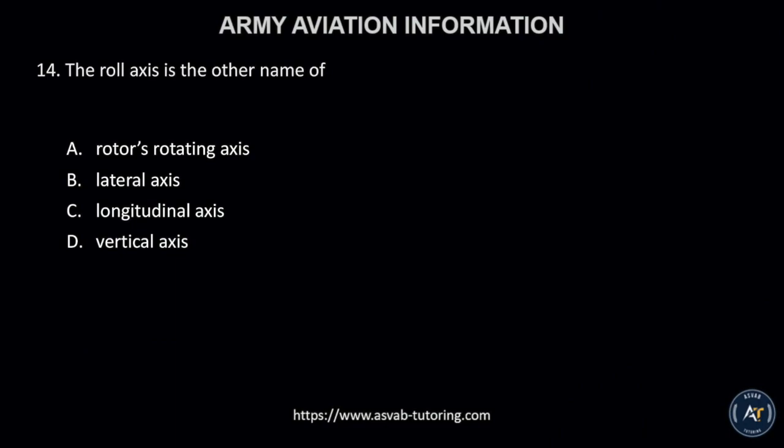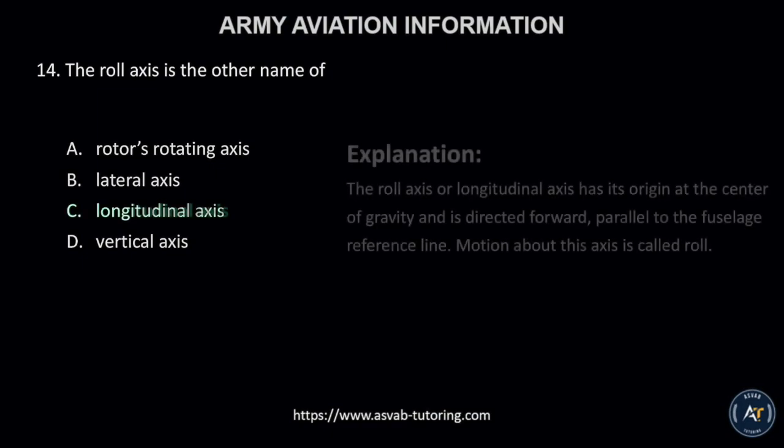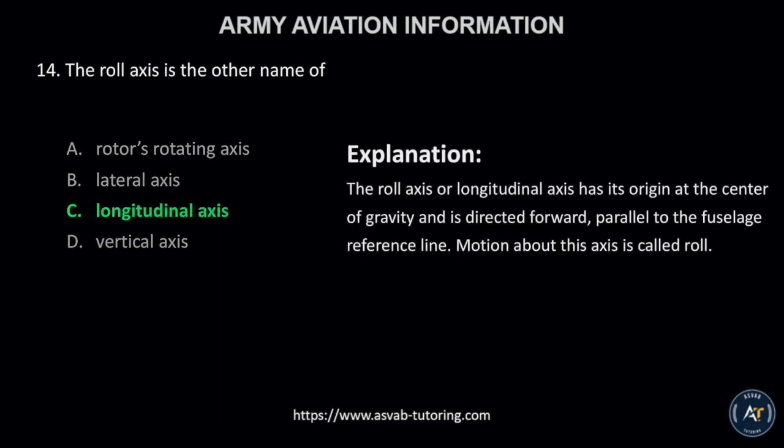Number 14. The roll axis is the other name of A, rotor's rotating axis; B, lateral axis; C, longitudinal axis; or D, vertical axis? The correct answer is letter C, longitudinal axis. The roll axis, or longitudinal axis, has its origin at the center of gravity and is directed forward, parallel to the fuselage reference line. Motion about this axis is called roll.